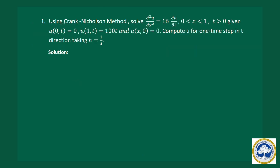Now let us move to the first question. Using Crank-Nicolson method, solve ∂²u/∂x² = 16 * ∂u/∂t, where x is in the range 0 to 1 and t greater than 0, with three boundary conditions given. We have to compute u for one time step in the t direction by taking h equal to 1/4. Here a is the coefficient of ∂u/∂t, which is 16, and h is given as 1/4.